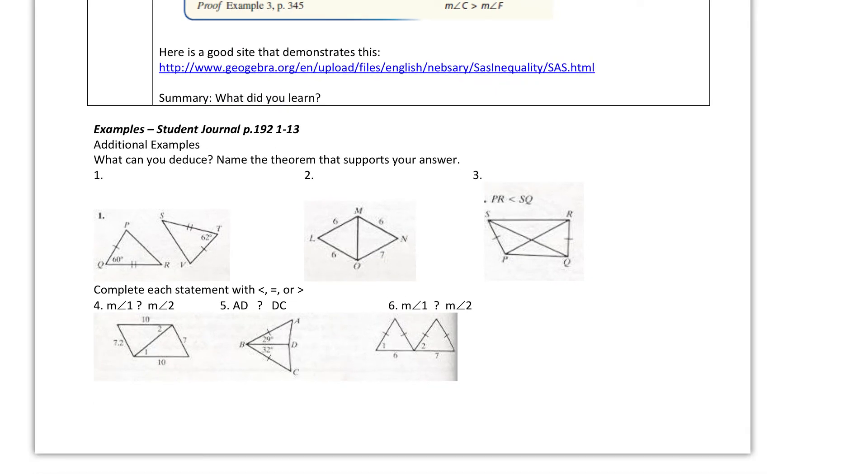It says, what can you deduce? Name the theorem that supports your answer. So we are going to take a look at this first one, and here, this is congruent, and these sides are congruent. This angle is 60, that angle is 62. So that means SV is going to be larger than PR.